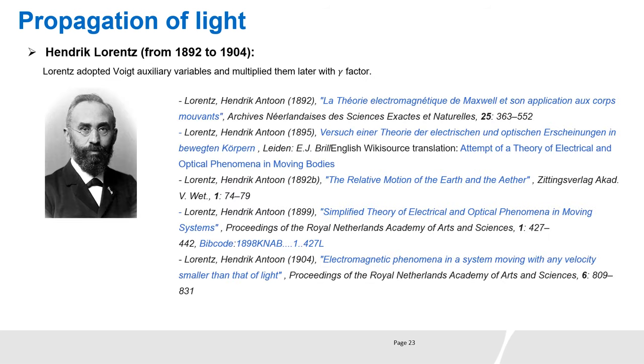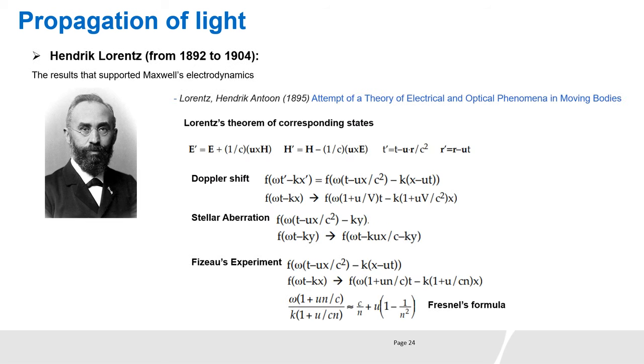Hendrik Lorentz made a series of contributions about electromagnetic phenomena with moving bodies. He adopted Voigt's auxiliary variables and he multiplied them later with a gamma factor. Using Voigt's auxiliary variables and what he called the theorem of the corresponding states, Lorentz derived the Doppler effect, stellar aberration, and Fresnel drag effect. These results supported the Lorentz approach and Maxwell's electrodynamics.